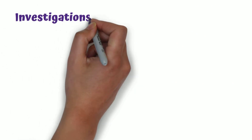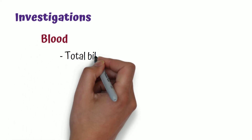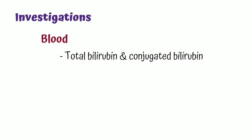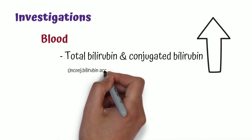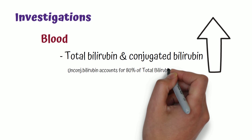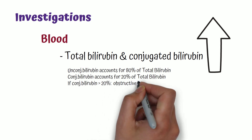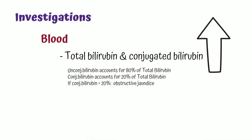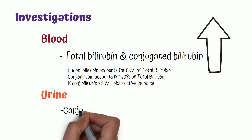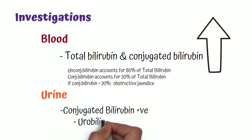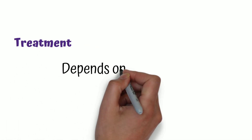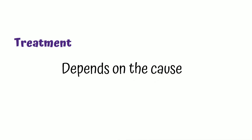In investigations, blood will show an increase in total bilirubin and conjugated bilirubin. Normally, unconjugated bilirubin accounts for 80% and conjugated bilirubin for 20% of total bilirubin. If conjugated bilirubin is more than 20%, jaundice is likely due to obstruction. In urine, conjugated bilirubin will be present and urobilinogen will be absent. Treatment depends on the cause — if it is due to a stone, ERCP and common bile duct exploration can be done.